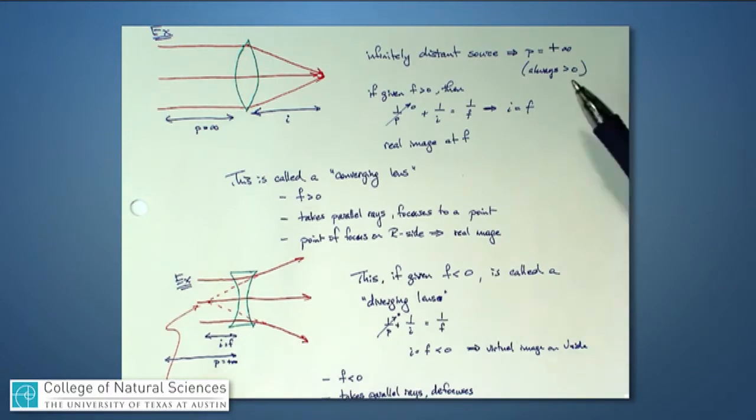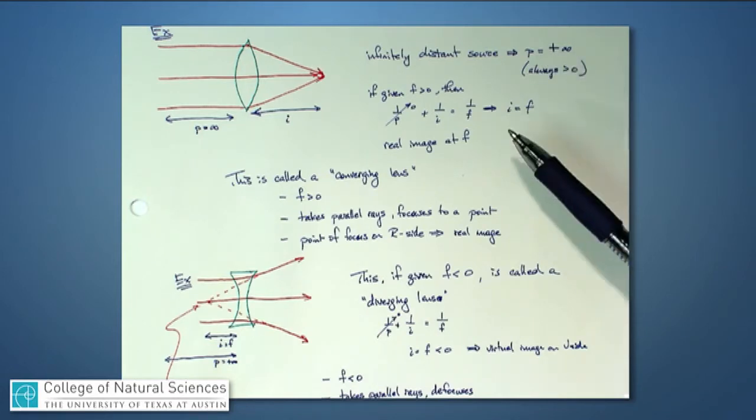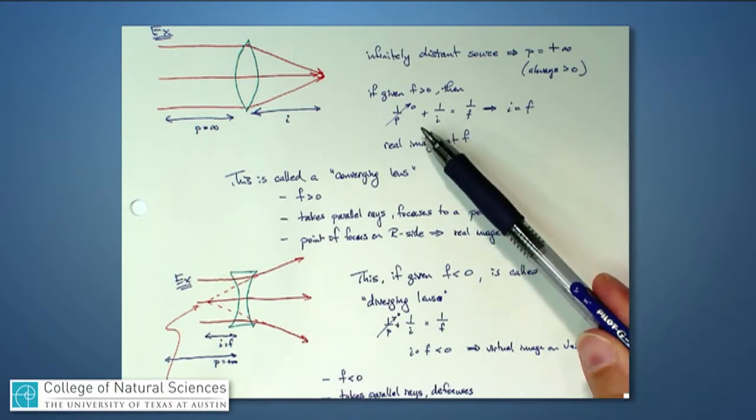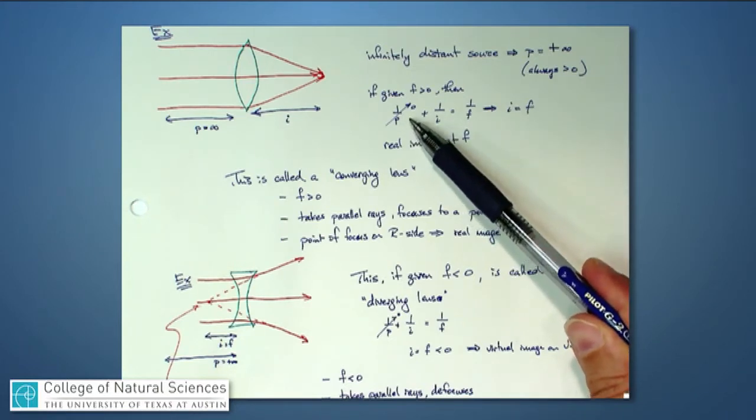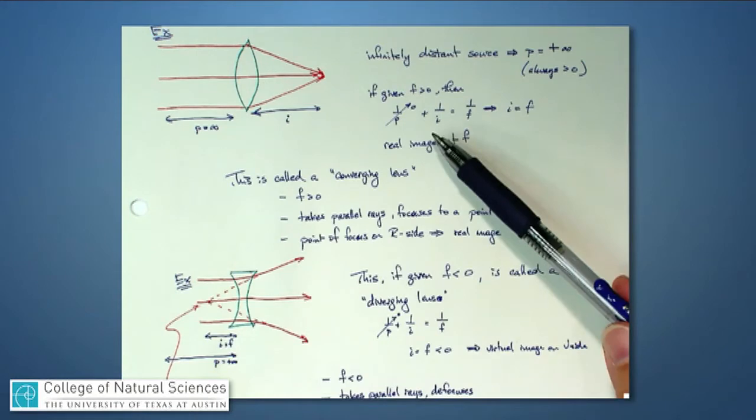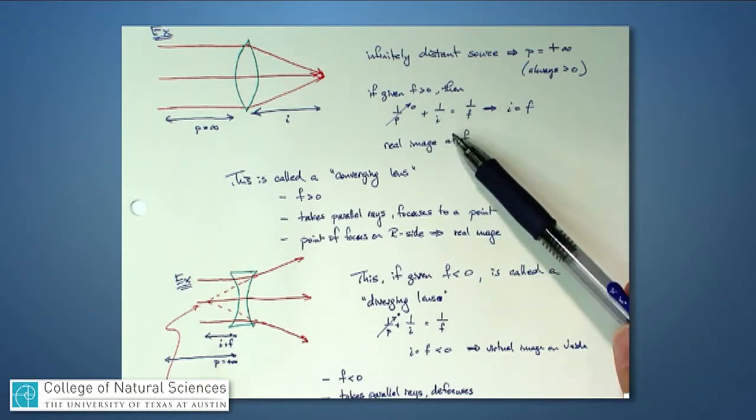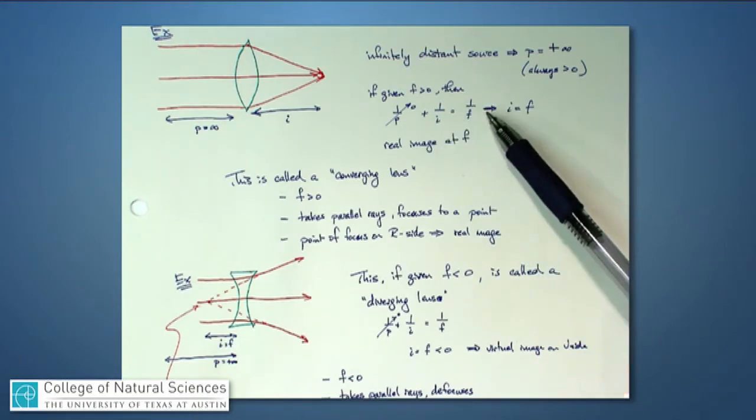If you had a very far away source of light and you set P as roughly positive infinity, it's always a positive number, remember, then when we look at our equation here, 1 over P will go to 0 because P is so large. And we're left with an equation that says 1 over I is equal to 1 over F.